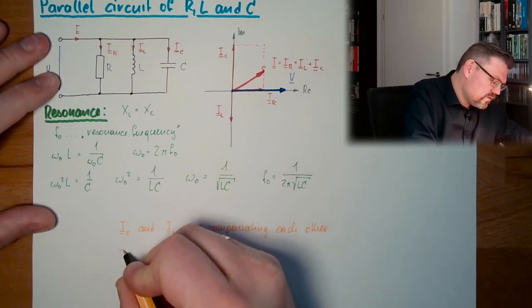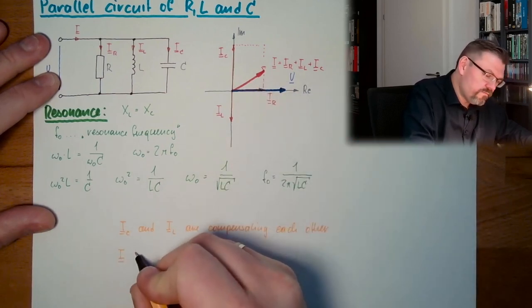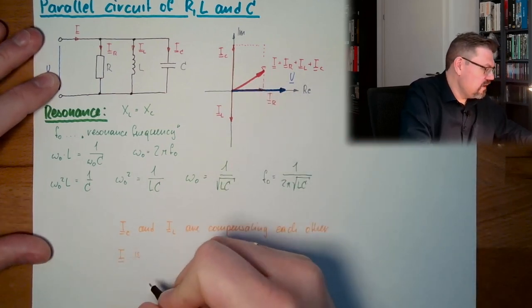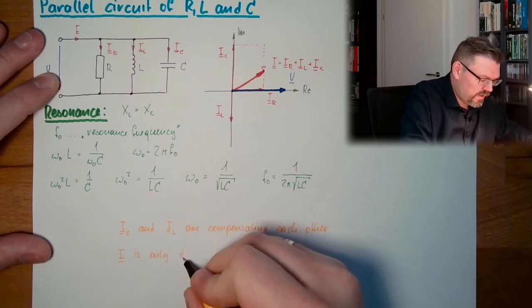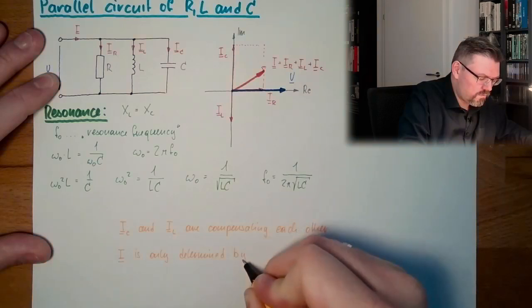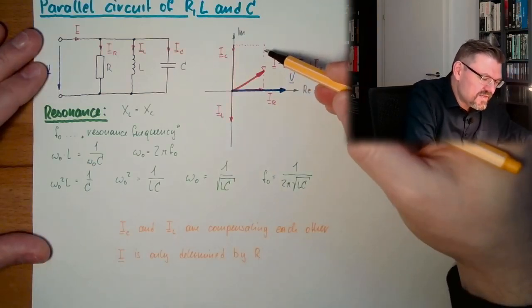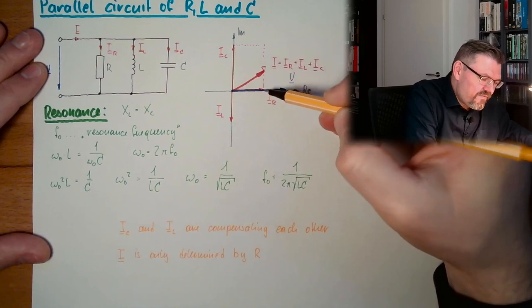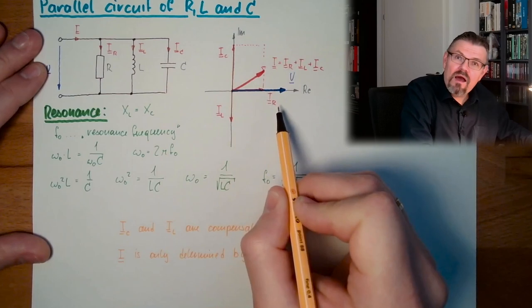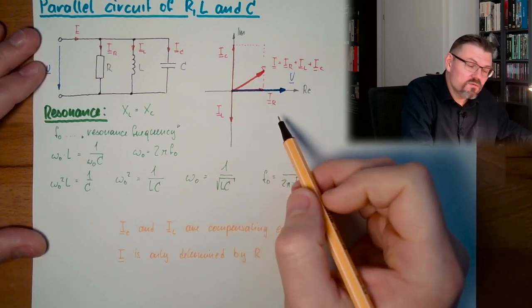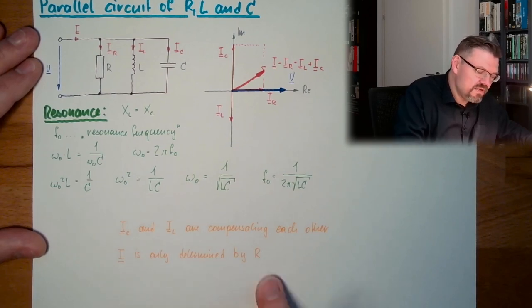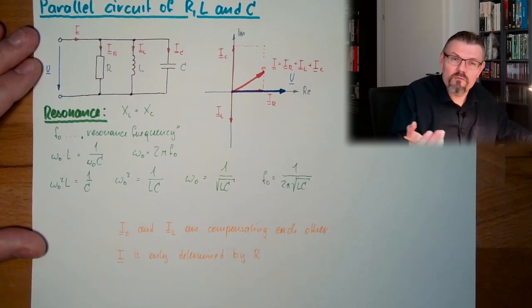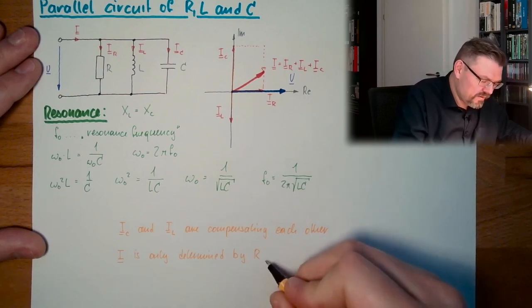I, the complete current, is only determined—if IC and IL are leveling each other—I end up with IR. The only thing which is pinning down the value of my I is my R. There is no other value.